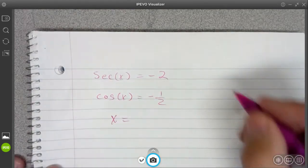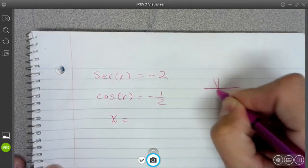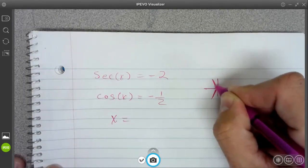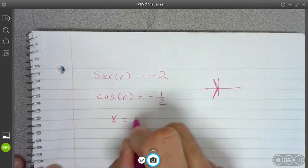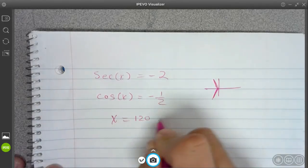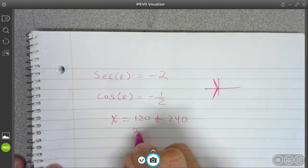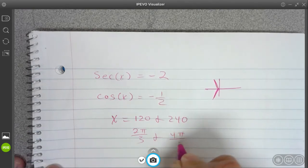Cosine is going to equal negative 1 half in these two positions. It's got to be negative in quadrant 2 and in quadrant 3. So it looks like I'm going to go with 120 and 240.